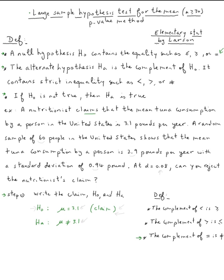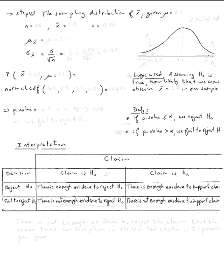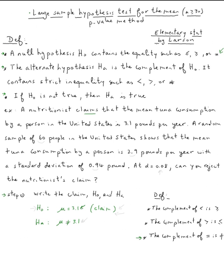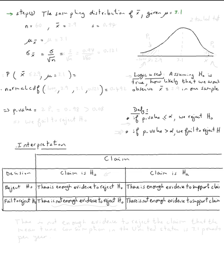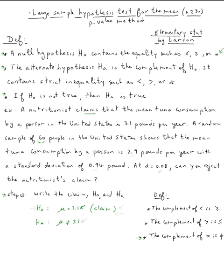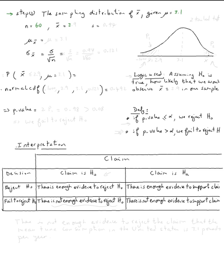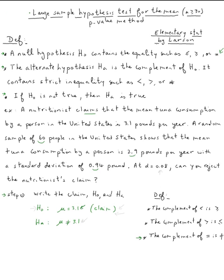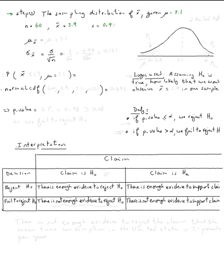Step two, we need to look at the sampling distribution of x̄ given μ equal 3.1. First let's write what is n. A random sample of 60, so n equals 60. The mean tuna consumption is 2.9, so x̄ is 2.9. With the standard deviation 0.94, so s equals 0.94.